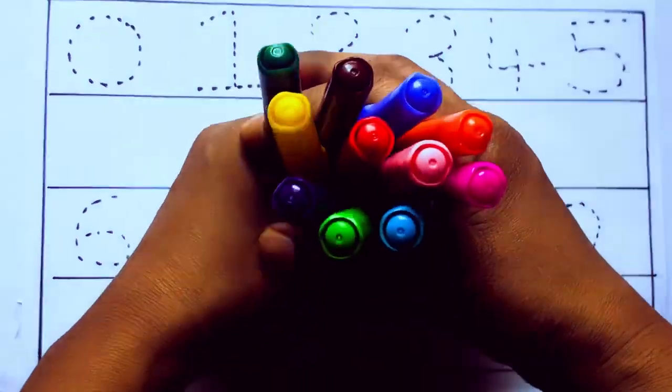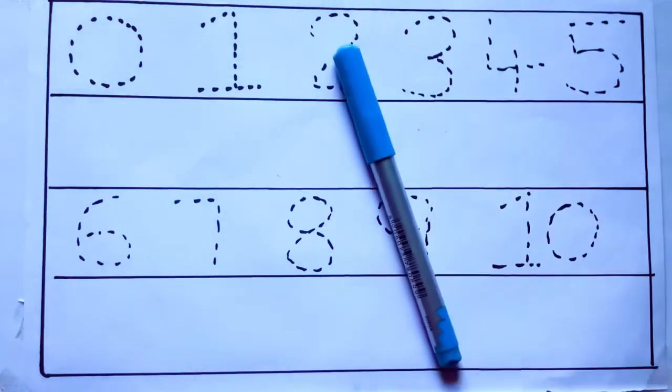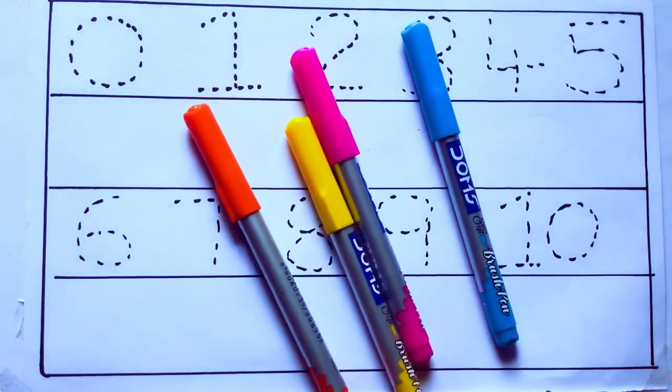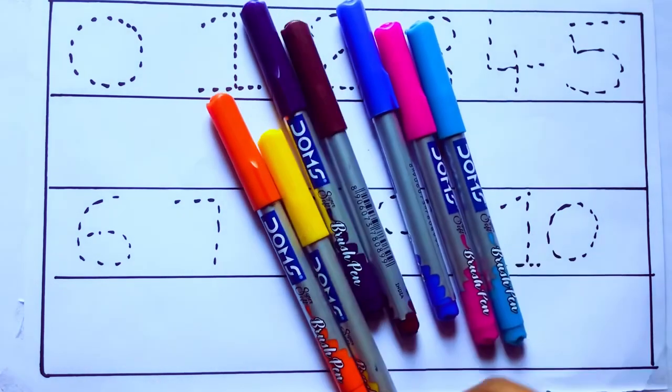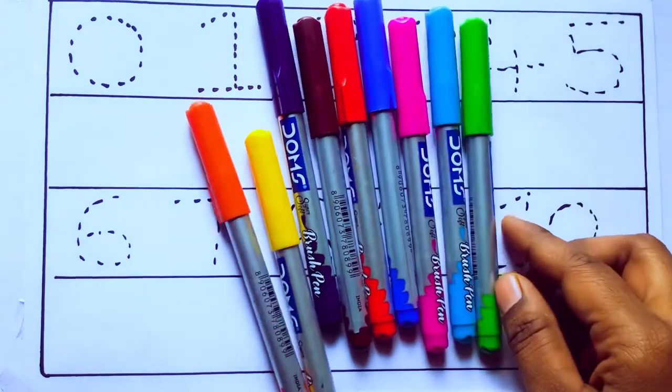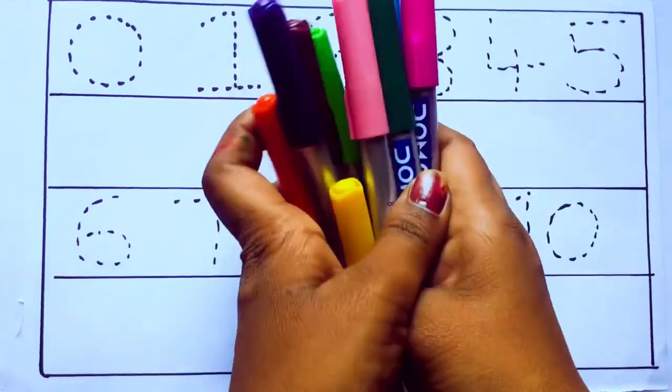Let's learn some colors. These are all the color pencils. Let's learn the names. Sky blue color, pink color, yellow color, orange color, violet color, blue color, brown color, red color, green color, and pink color.